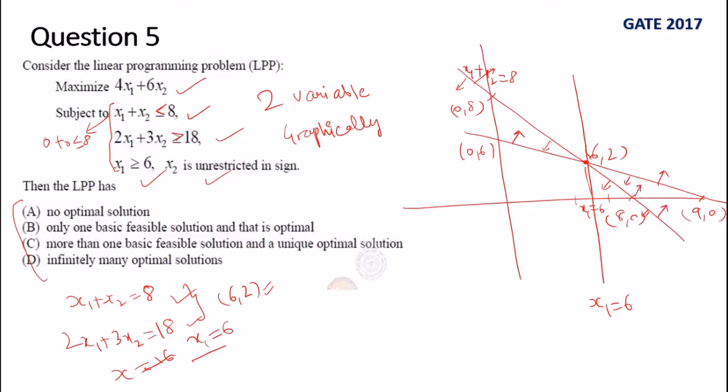For x₁ ≥ 6, so this is the line x₁ = 6, so x₁ greater than 6 means x₁ = 6 can be on this side.